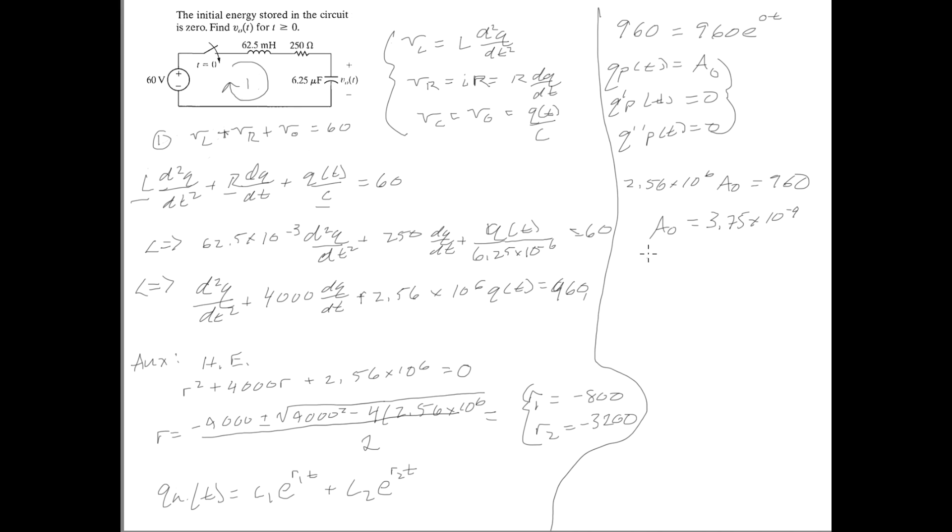Now that we have our homogeneous solution down here, and our particular solution A0, which is this, we can find the actual QP, Q of T, which is just equal to QH of T plus QP of T.